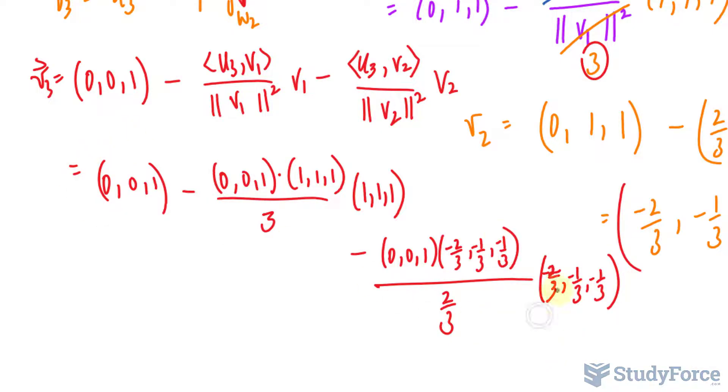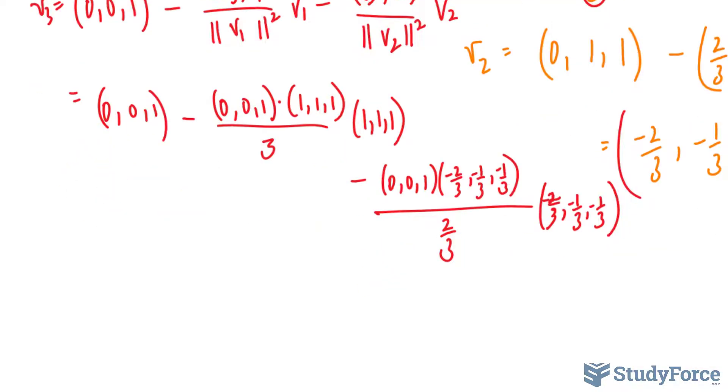So now you have to subtract all of these together, and that will end up giving you V sub 3. If you do that correctly, your vector should be 0, negative half, and positive half.